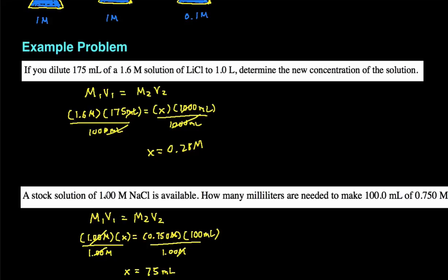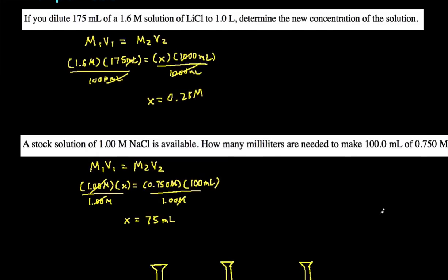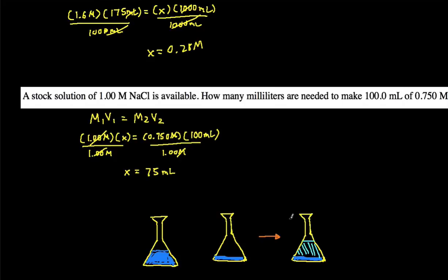So that means we need 75 milliliters of the original 1.00 molar NaCl to dilute it into 0.75 molar NaCl. So here's pictorially how this looks like. We have our original concentration, which is 1.00 molar of the NaCl. Of that stock solution, we took 75 milliliters.